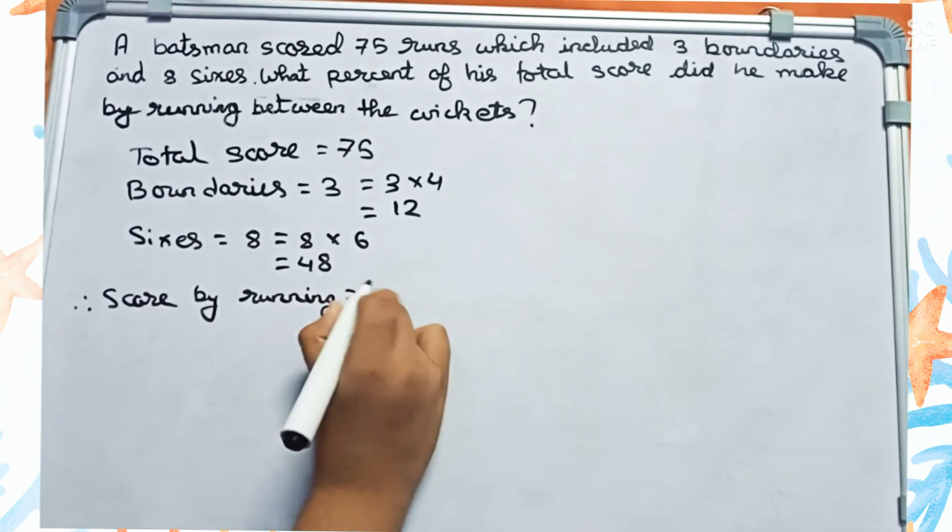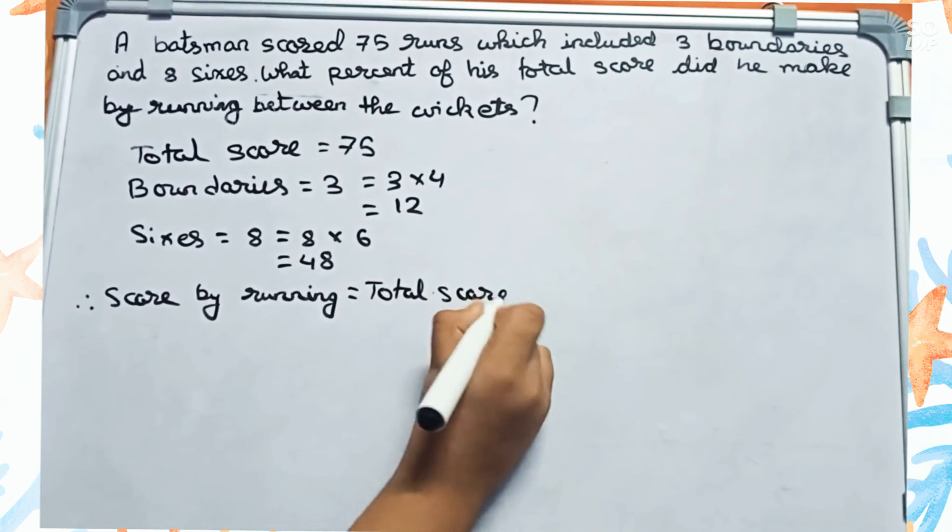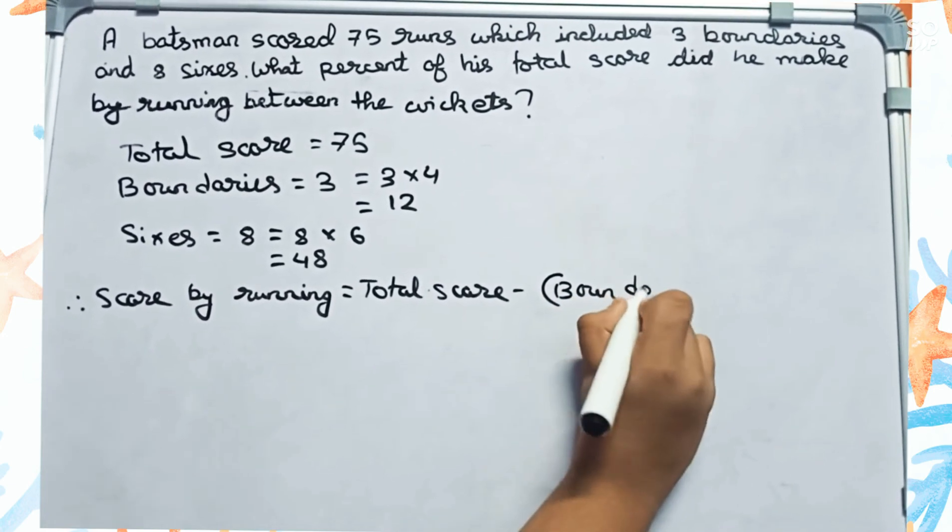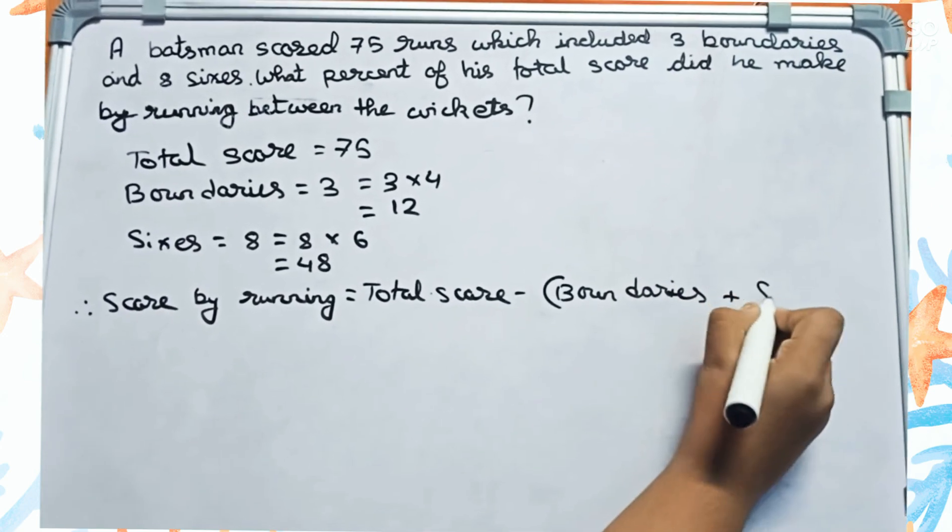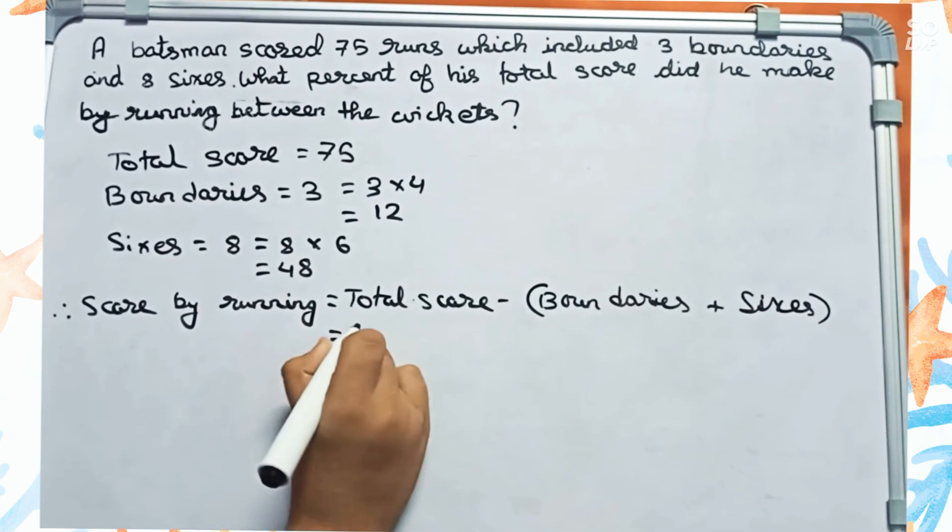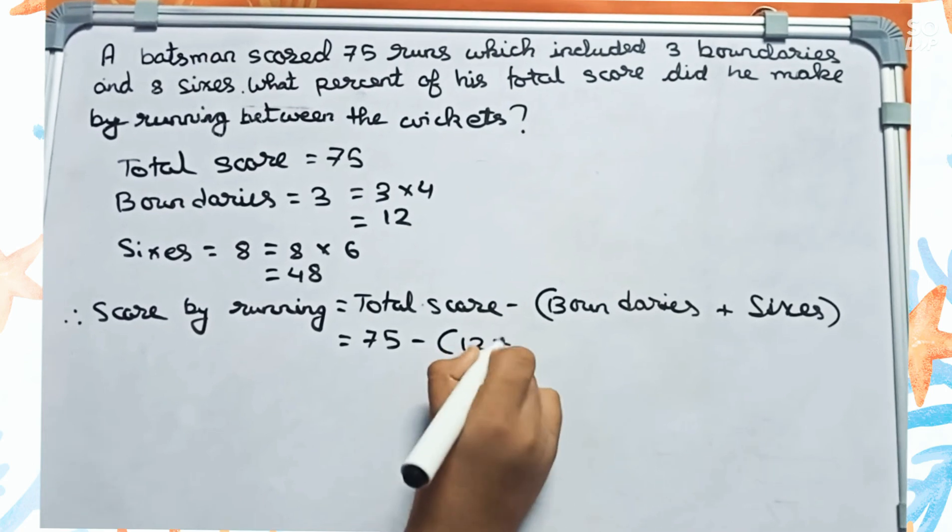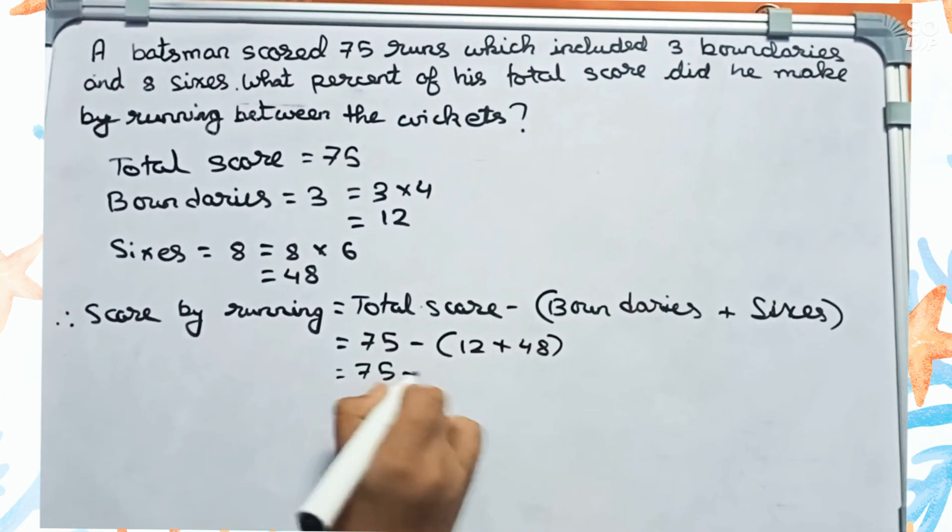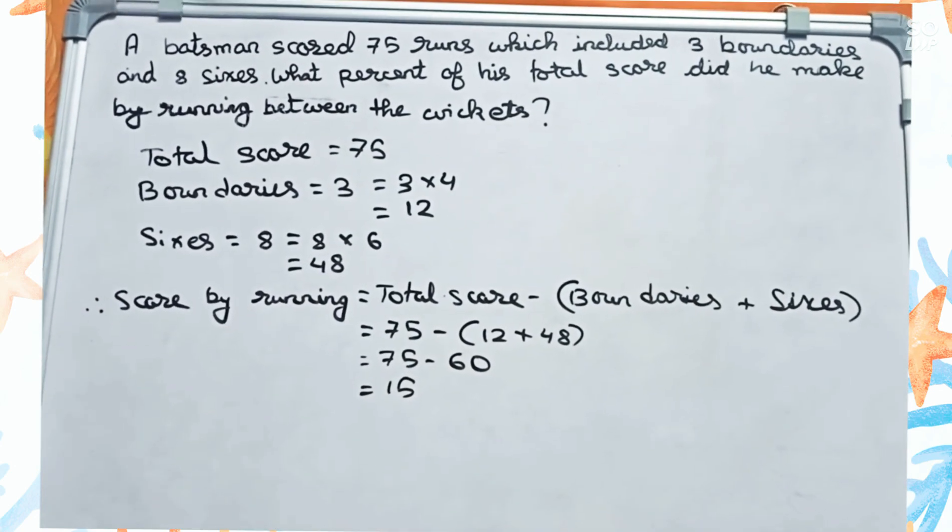We can write it as: score by running equals total score minus boundaries plus sixes. That's 75 minus 12 and 48, which is 75 minus 60, equals 15. The score by running between the wickets is 15.